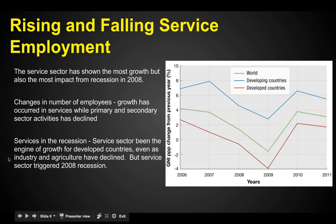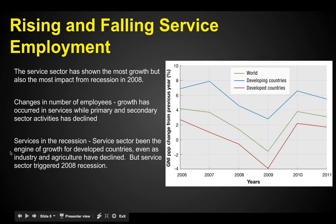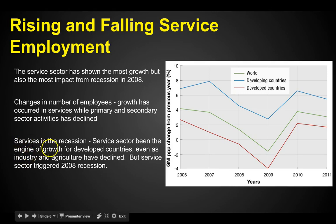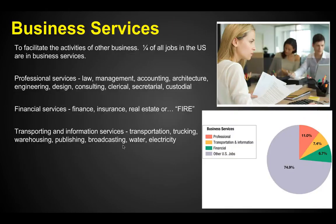The service sector has been the engine of growth for developed countries, even as industry and agriculture have declined. But the service sector also triggered the recession. In developed countries, services fuel the economy while farming and the primary and secondary sectors decline. The recession was caused by the service sector through the housing market bubble and crash — but services still fuel the economy for developed countries. That's our quick look at Chapter 12, Key Issue 1.